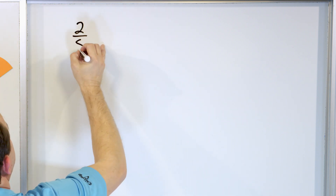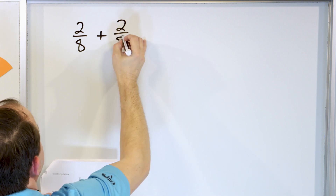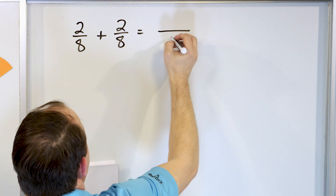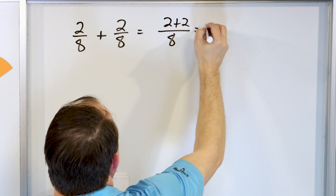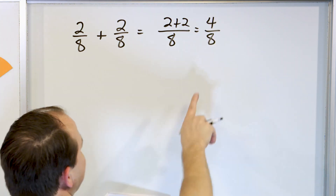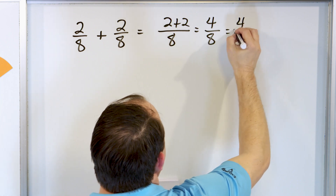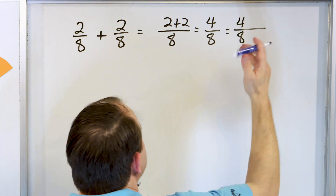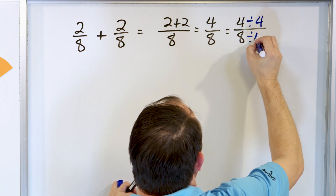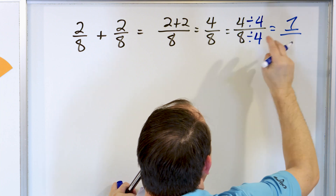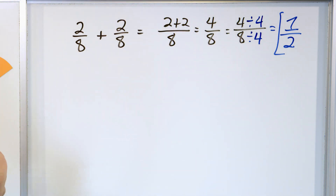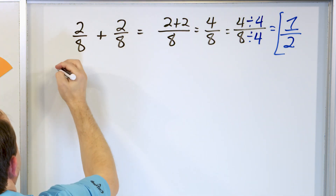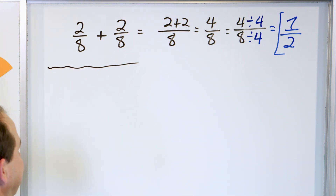Let's take a look at two-eighths, and we'll add to that another two-eighths. We have eight, so that goes into our answer — we just carry it through. Two plus two is equal to four on the top and eight on the bottom. Now we can simplify this by dividing top and bottom by four. Four divided by four is one, and eight divided by four is two, and so the answer is one-half. Once you do this enough, it really gets to be second nature and just really easy, and that's why we're doing so many.